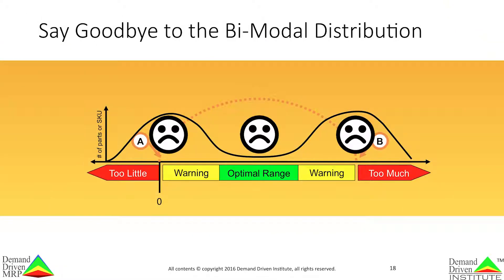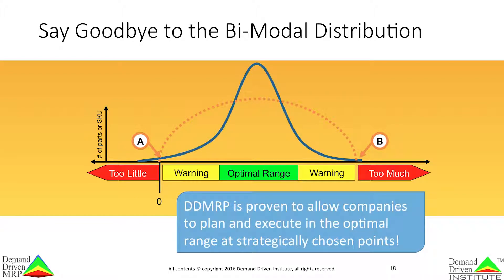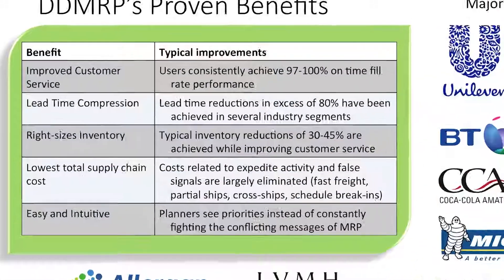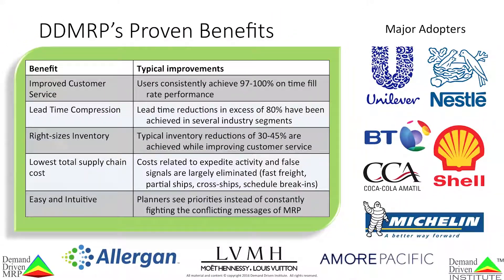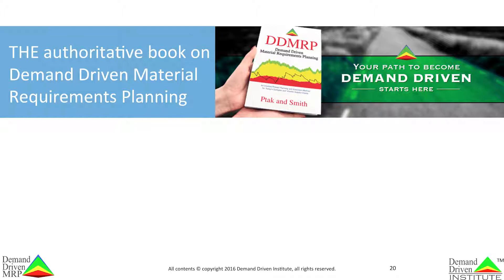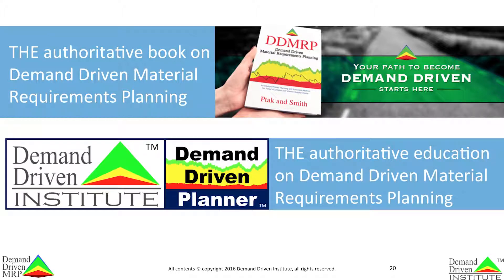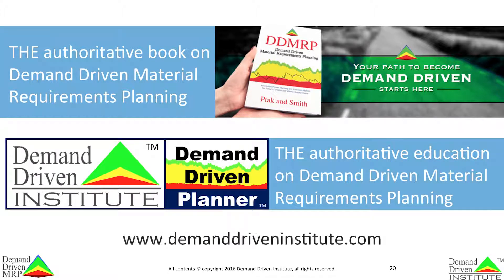And what about that bimodal distribution? You can say goodbye to it. DDMRP is proven to allow companies to plan and execute in the optimal range at strategically chosen points, meaning flow is protected and promoted. The typical benefits are compelling: users consistently achieve 97% to 100% on-time fill rate performance, lead time reductions in excess of 80% in several industry segments, and typical inventory reductions of 30% to 45% while improving customer service. Costs related to expedited activity and false signals are largely eliminated. You can learn more by reading the authoritative work, Demand Driven Material Requirements Planning, or by taking the Demand Driven Planner Program, available through affiliates worldwide or online. Visit the Case Study section of the Demand Driven Institute website to see dozens of case studies on DDMRP.